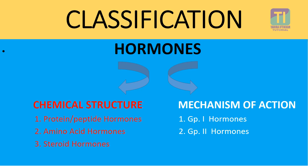After the definition, we come to the classification of hormones. Hormones are classified in two ways: on the basis of chemical structure, and on the basis of their mechanism of action. First, we will classify hormones on the basis of chemical structure, where they are classified into three groups.